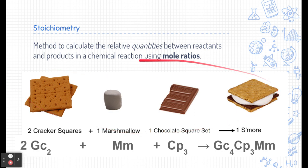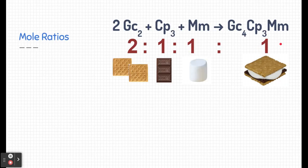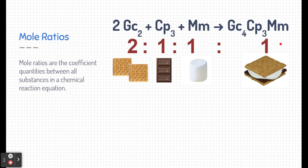Here's a fictitious reaction written more like a recipe you'd find in the kitchen, and that's by design. In chemistry, a chemical reaction is a lot like a recipe. Here we have two graham cracker squares, one marshmallow, one chocolate piece, and that equates to one s'more after our recipe is finished. A mole ratio is just the quantities of each of the ingredients and the quantity of the product, and these quantities are written as coefficients.